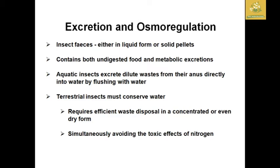Among all these organs, the Malpighian tubules are the major organs of excretion in the insect body. The excretory and osmoregulatory products in insects are mainly in the form of solid pellets or liquid. Both forms contain undigested food as well as metabolic excretory products. Aquatic insects mainly excrete diluted waste from their anus directly into water by flushing, but terrestrial insects must conserve water and require efficient waste disposal in concentrated or even dry forms.